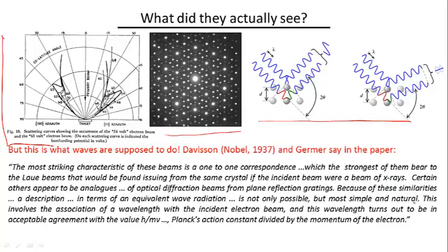And finally they say this, so their data made sense if it involves association of a wavelength with the incident electron beam, and this wavelength turns out to be in acceptable agreement with the value of h over mv, h being the Planck's action constant divided by the momentum of the electron.